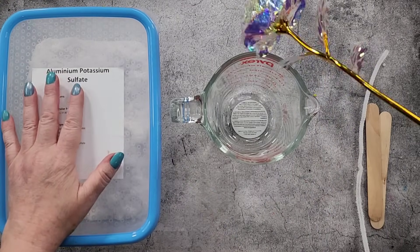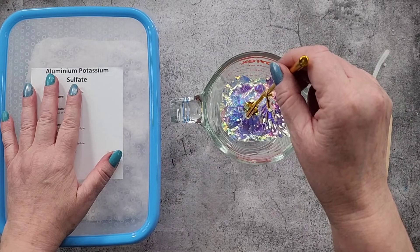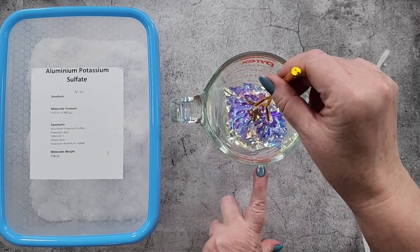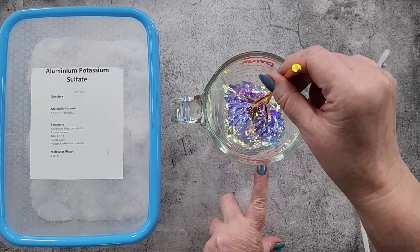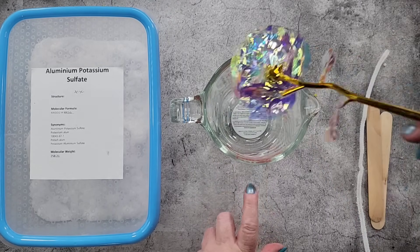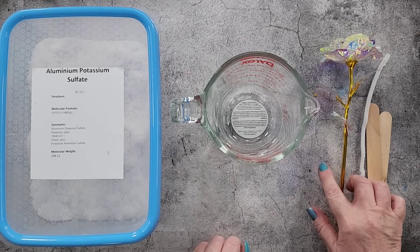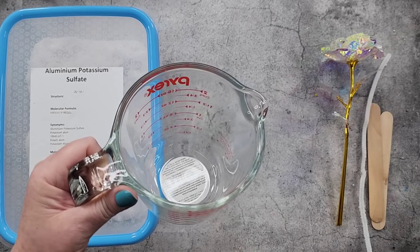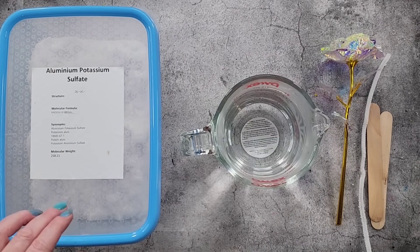So I need quite a lot because I want to sink that in there. I think probably 500 or 600 milliliters I will need. So my kettle has just boiled. I'm going to go and grab some boiling water and then I will be right back.